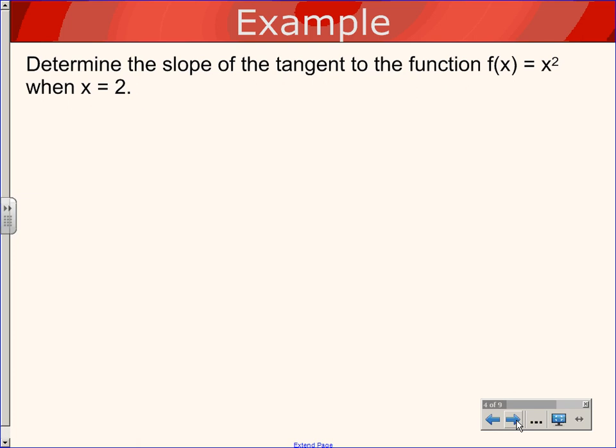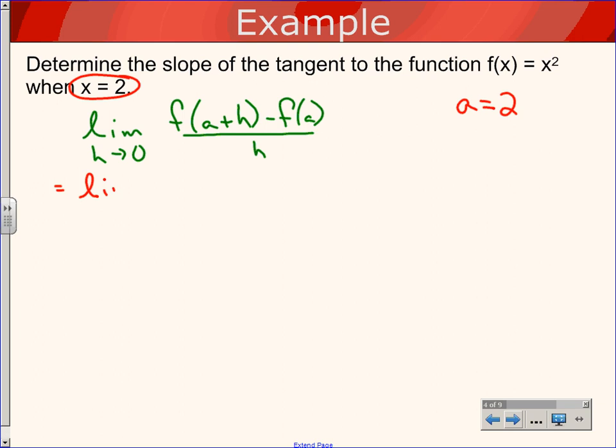So we're going to try this one right here. It says determine the slope of the tangent to the function f(x) = x² when x is 2. So I'm going to write down that formula again. It said the limit as h approaches zero, and we had written down f(a+h) - f(a) all over h. We're going to let h get closer and closer to zero. Now in this case, we've said specifically to find the slope when x is 2. So that means that our a value is 2. We're picking a particular location.